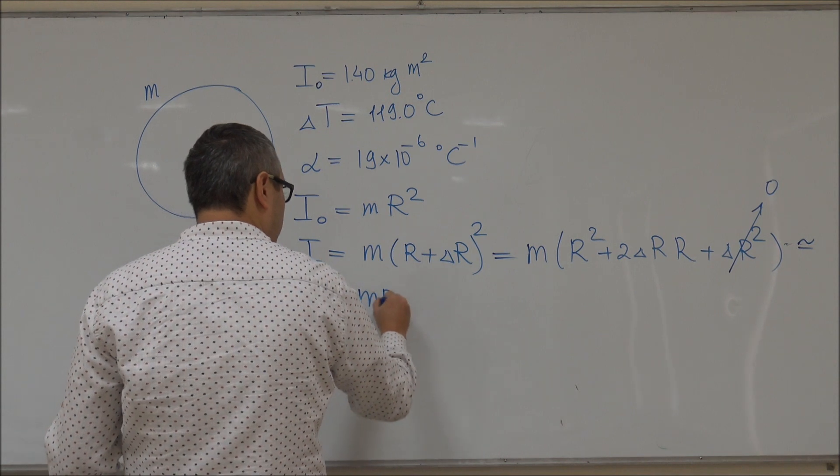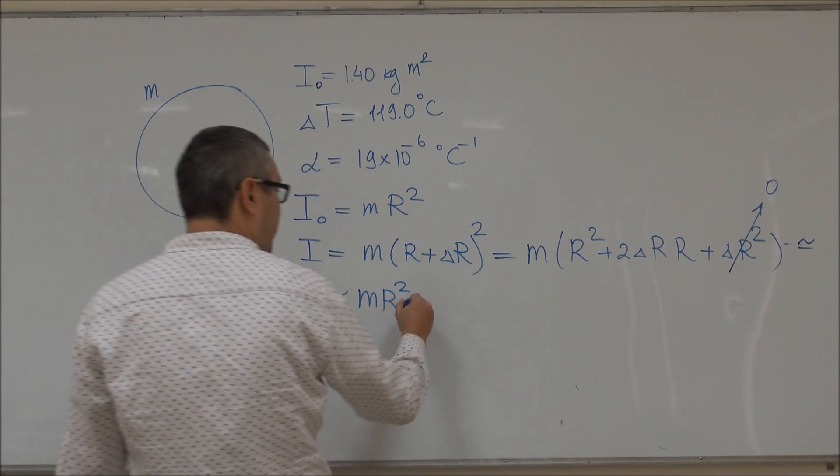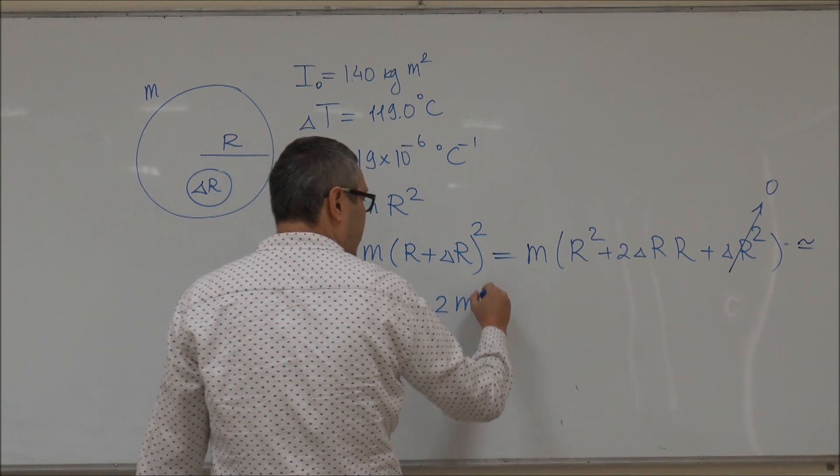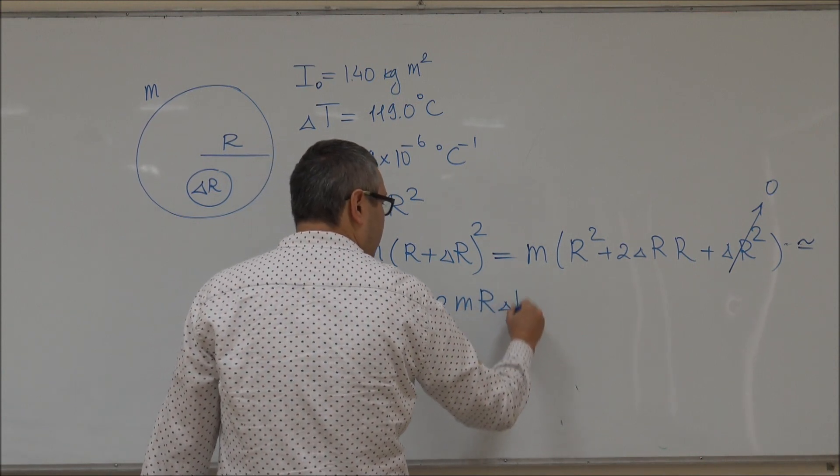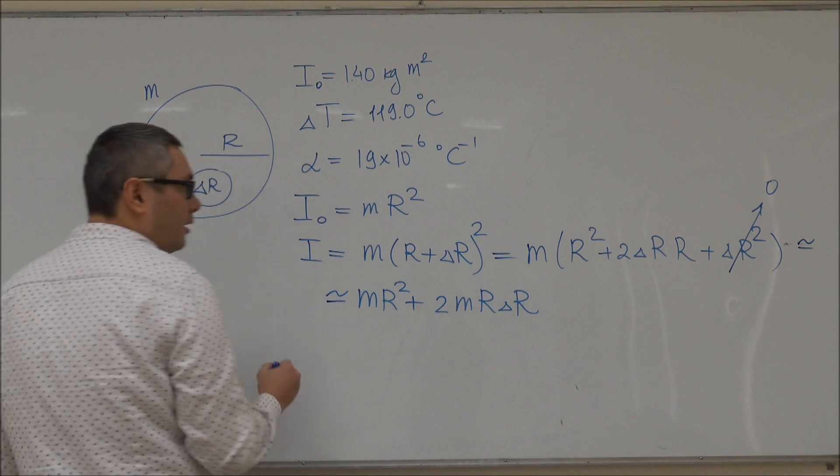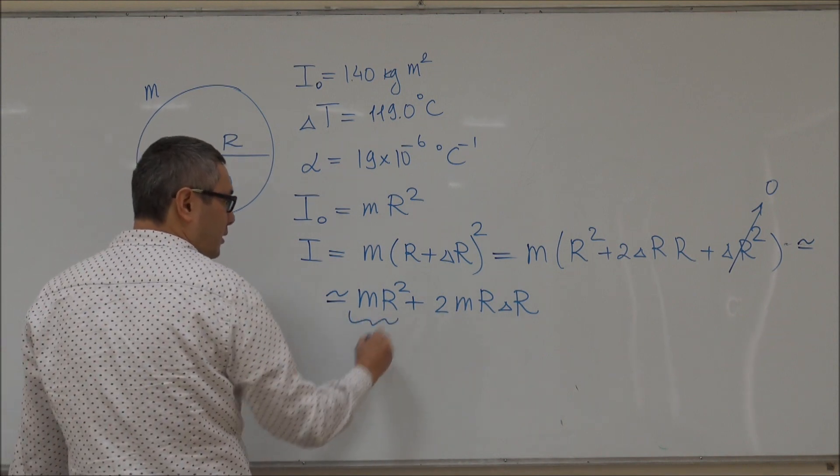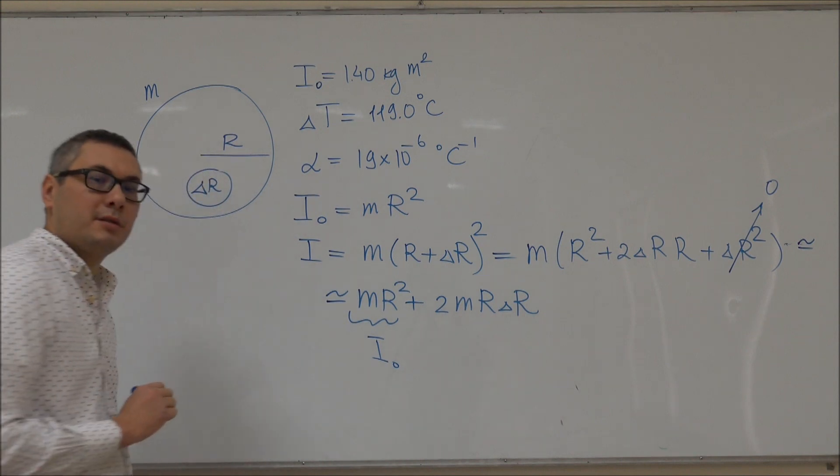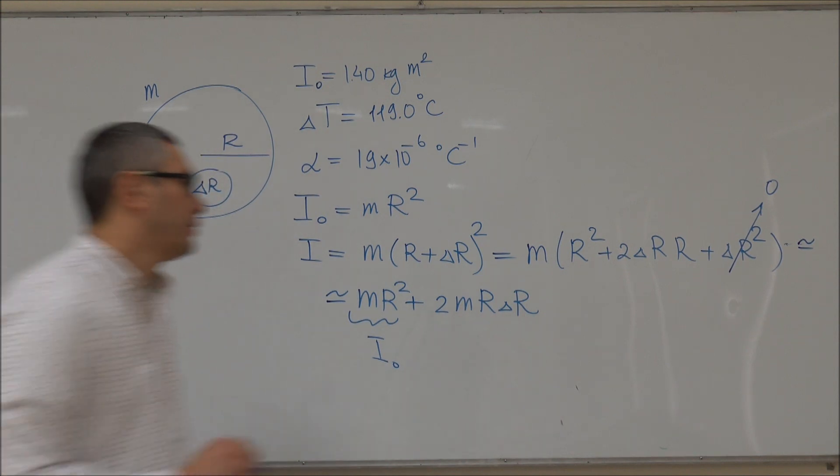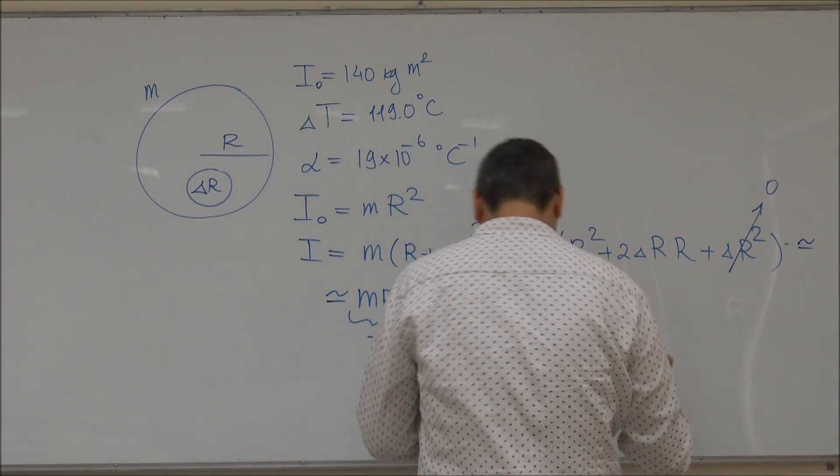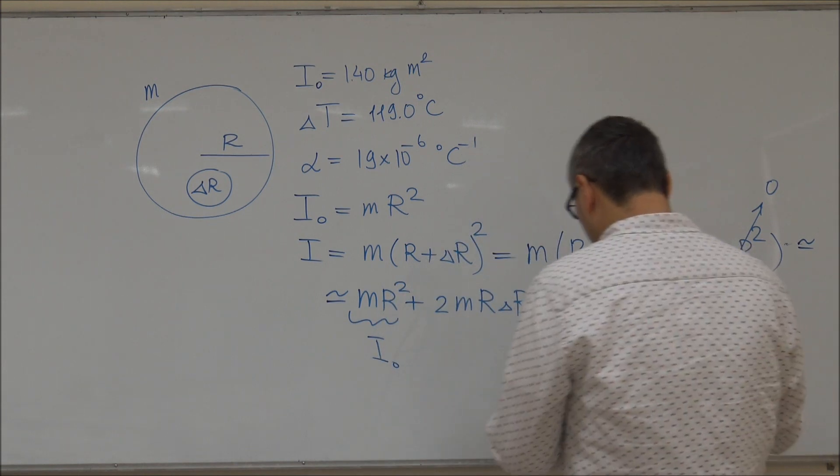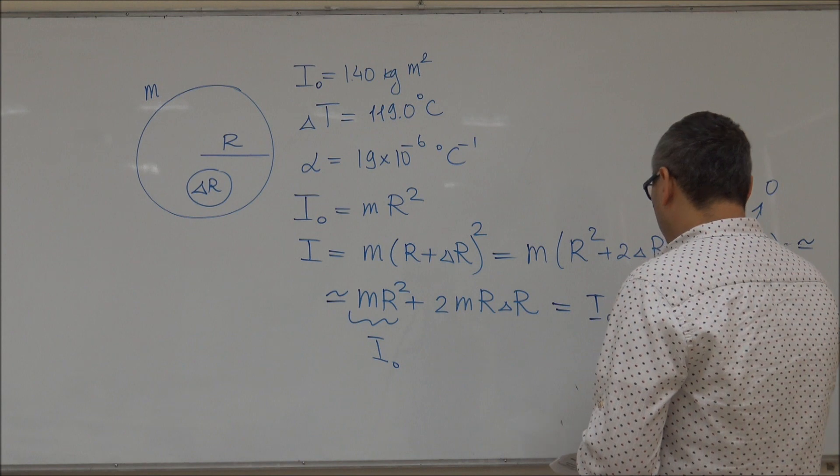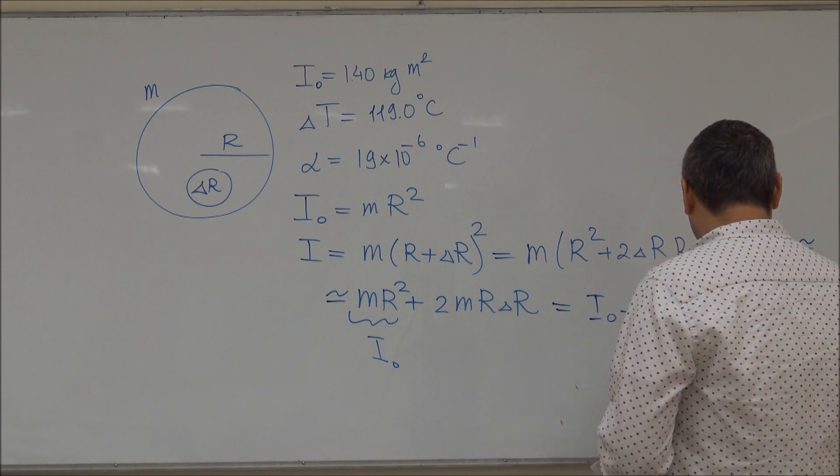So then this can be said to equal M(R² + 2R·ΔR). We can say that this is equal to I₀ + 2MR·ΔR.